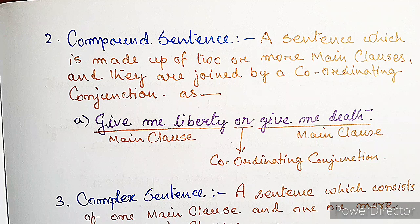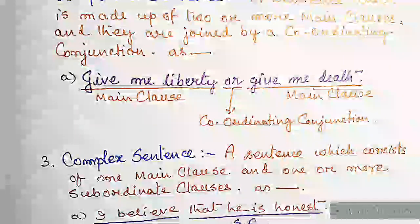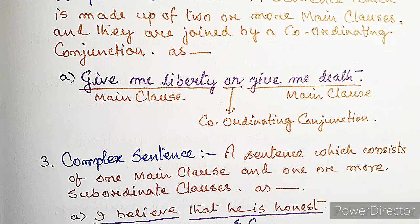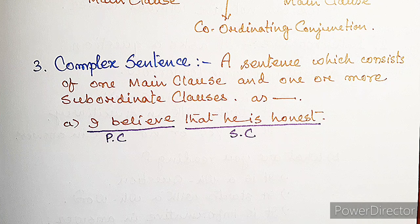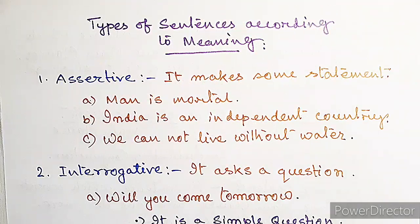A compound sentence is made up of two or more main clauses joined by a coordinating conjunction — for example, 'Give me liberty or give me death', where the two main clauses are joined by 'or'. A complex sentence consists of one main clause and one or more subordinate clauses — for example, 'I believe that he is honest', where 'I believe' is the main clause and 'that he is honest' is the subordinate clause.